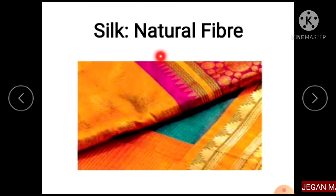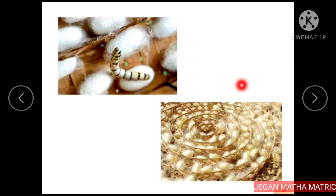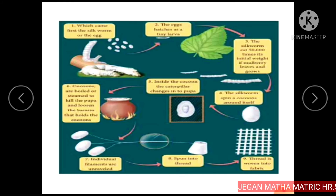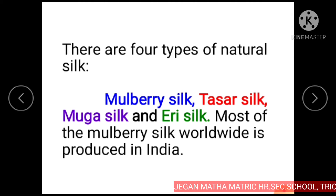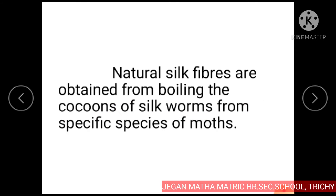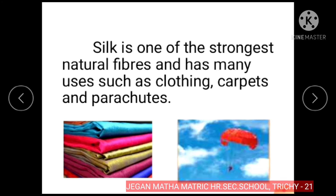Silk is a natural fiber. Natural silk fibers are obtained from boiling the cocoons of silkworms from specific species of moths. There are four types of natural silk: mulberry silk, tasar silk, muga silk and eri silk. Most of the mulberry silk worldwide is produced in India. Silk is one of the strongest natural fibers and has many uses such as clothing, carpets and parachutes.